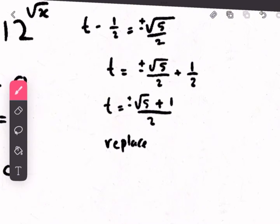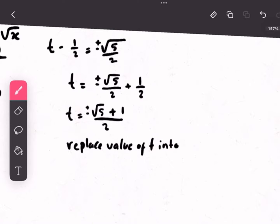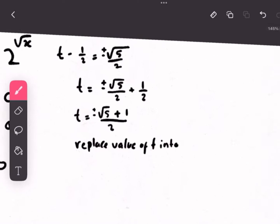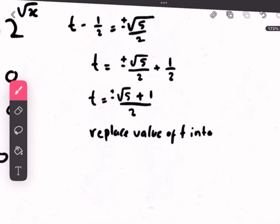Now we can replace t, the value of t, into the last equation we had, which was 2 to the power of root x is equal to t.